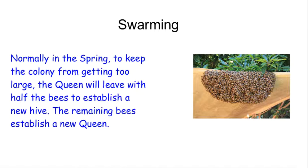Does the hive situation ever change? Yes, it does. Pretty much the hive collapses when it gets too big — you can only maintain so large a hive. Normally this happens in spring, and to keep the colony from getting too large, the queen flies off with about half — sometimes up to 60% — of the bees to find a new place to establish a hive. This is called swarming. The bees left behind then have to get themselves a new queen and keep the old hive.